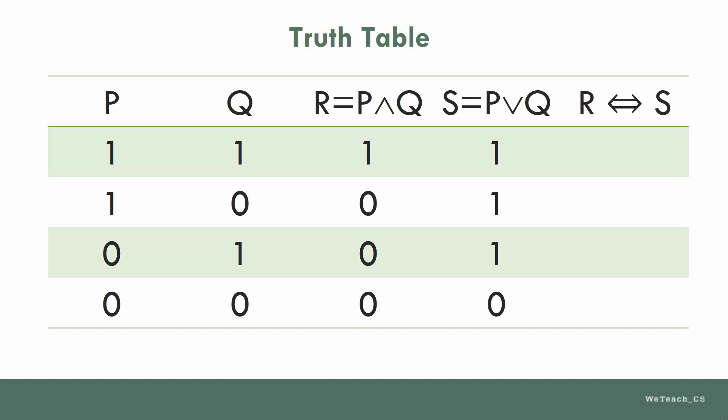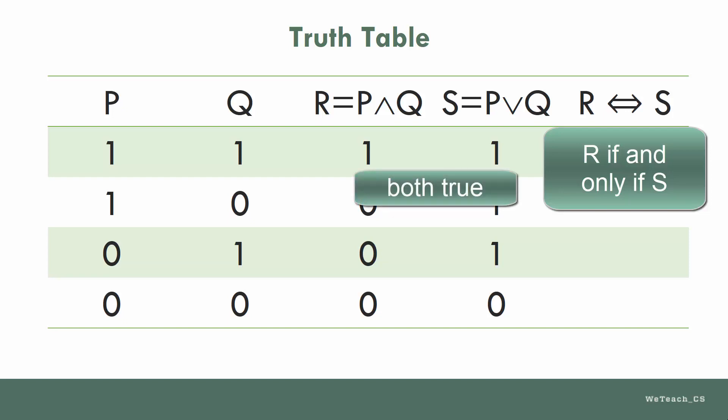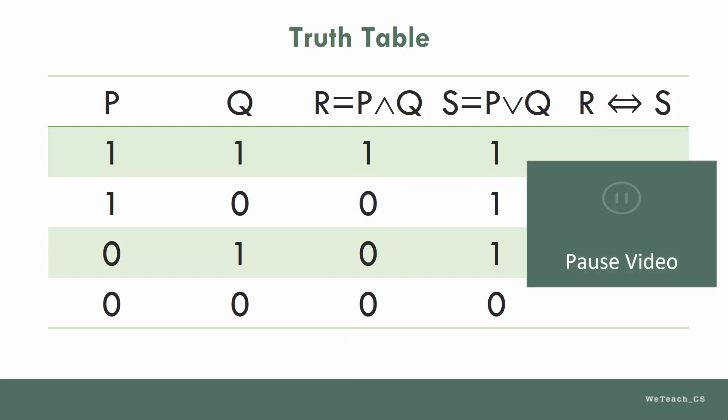The final step is to compare the results of R and S to see if they meet the biconditional operator requirements. Recall from the lesson that the phrase if and only if is true when both parts are true, as well as when both parts are false. With that in mind, take a moment and fill out the final column.